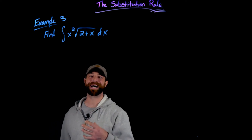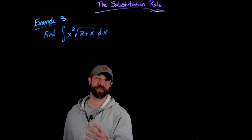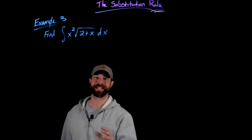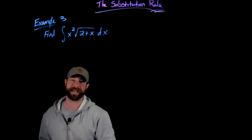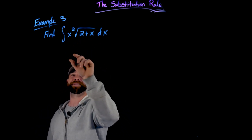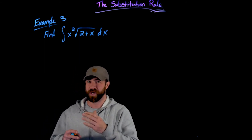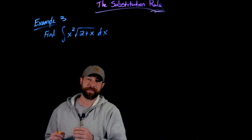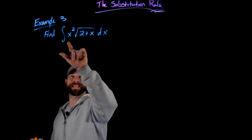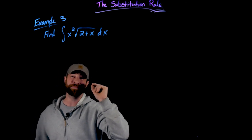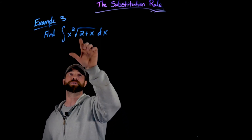For this third problem, the u substitution isn't clearly obvious. My first inclination might be to let u equal x squared, since differentiating gives 2x and there's an x in the integrand. However, the issue is that the x has something being added to it inside the square root — that's very different from multiplication, which is easy to manipulate. What's most difficult to deal with is the expression under the square root, so I'm going to let u equal 2 plus x.